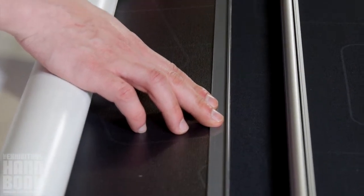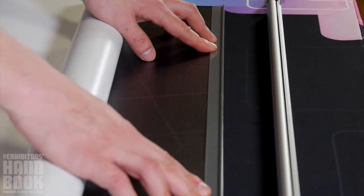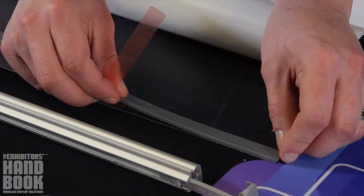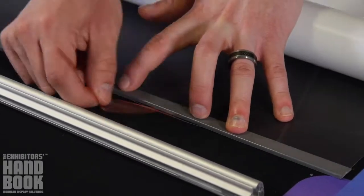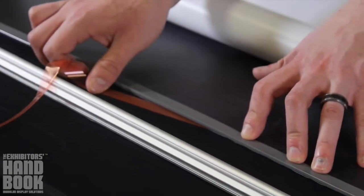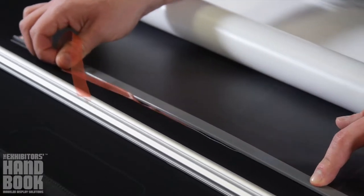Align the adhesive slider with the top edge of your graphic. Carefully remove the adhesive tape from your slider and apply pressure. Peel back the protective covering 2 inches and press onto the graphic. Carefully remove the rest of the protection and press firmly.